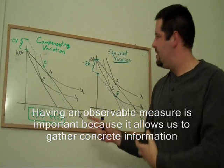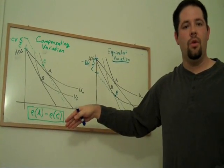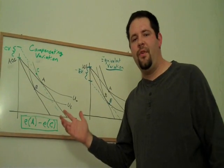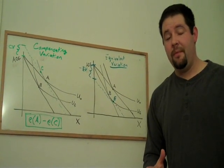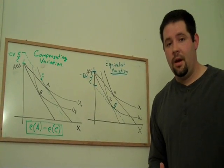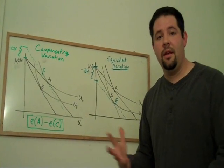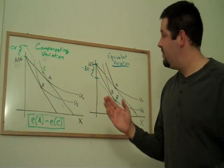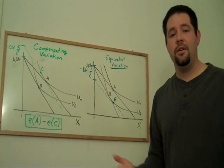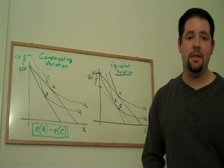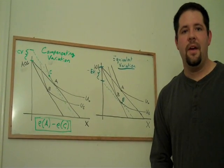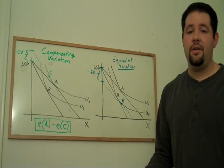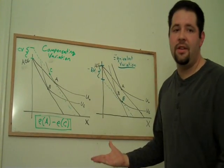We can observe something like these in the real world. So it turns out that these are useful ways to represent how well off people are made by changes of prices in the market. And it is very useful in terms of understanding the effects of policies.